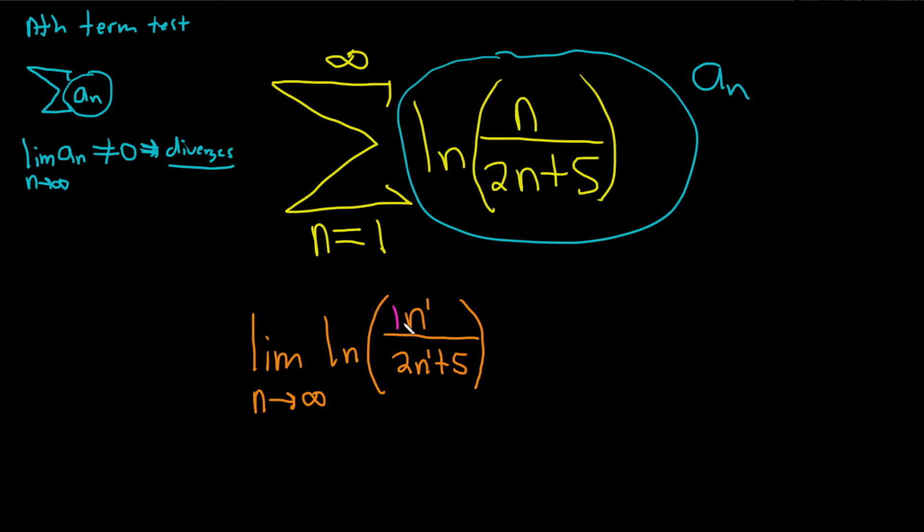So there's a 1 here and there's a 2 here, so the limit on the inside is 1 half. So this is equal to the natural log of 1 half, because the inside piece is approaching 1 half as n approaches infinity.